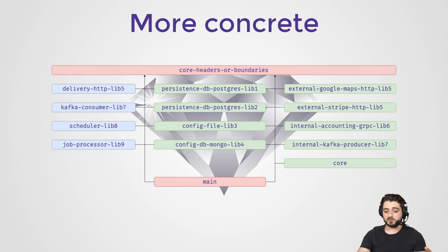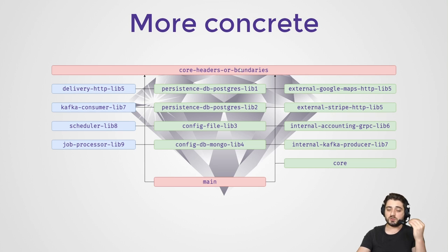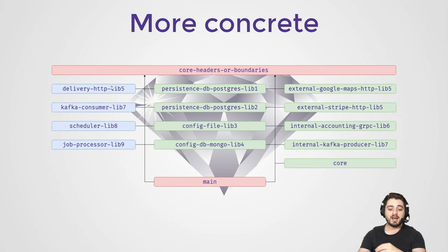I also have a slide on how you can keep only the traits and data structures in the core. The core is moved so that only traits remain there, and then you have a 'core-impl' as one of these green boxes. As soon as you compile your traits — and in Scala these would be case classes just to make your traits compile — everything else can compile in parallel. When everything finishes, the main can start compiling.